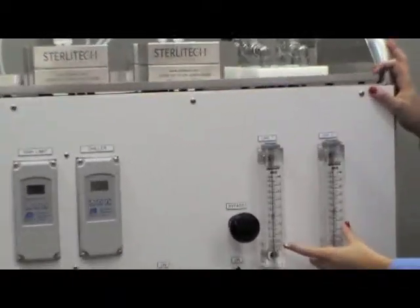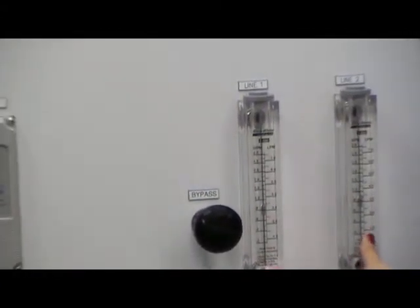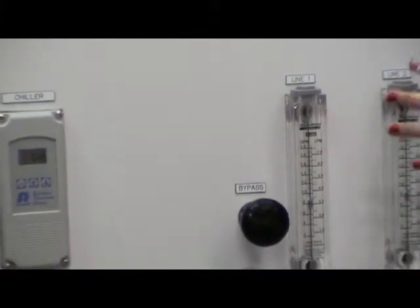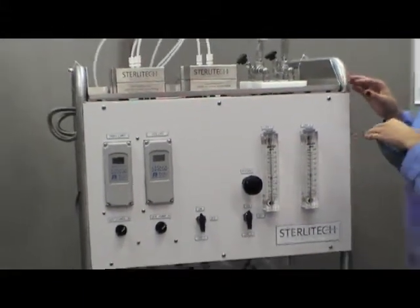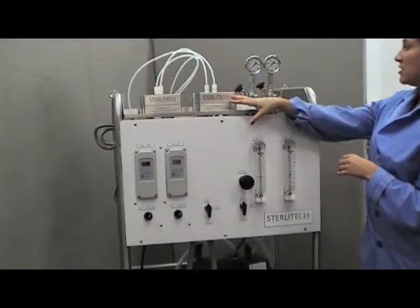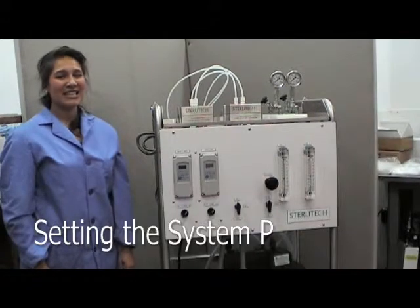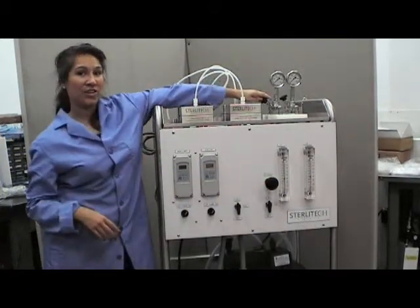You can see the readings on the flow meter are both going to be the same. They're currently reading at about 1.0 gallons per minute. The entire system is open which means you currently have flow running through your bypass as well as through the cells and feeding back into your collection tank in the back. We can set the system parameters by adjusting both the bypass valve as well as the concentrate control valve.